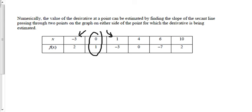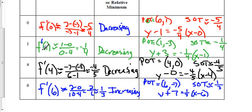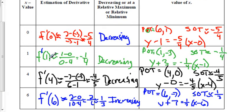Looking back at the chart, they gave us all the points. The point of tangency is wherever that value is. For example, at x = 4, y = 0, we find the slope of the secant line through the two surrounding points. Even if the interval differences aren't equal, we use what the table gives us. So f'(1) ≈ -1/4, meaning the function is decreasing there. We record the point of tangency, the slope, and use the point-slope equation to get the tangent line equation at each x value.